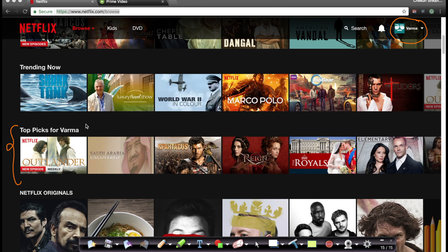It says Top Picks for Verma. Using all of my Netflix viewing behavior, it realized that I might like the new movie Outlander or something about Saudi Arabia or Spartacus or Rain Royals. From this, you know that I love history. There's also something about the British royals. And how do you recognize this? There are multiple ways to do it.